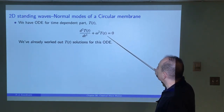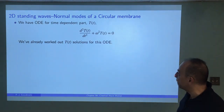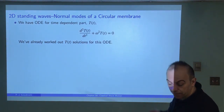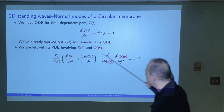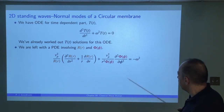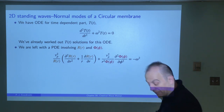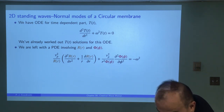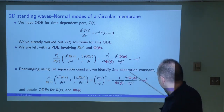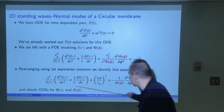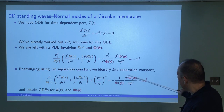We've taken our partial differential equation and pulled out an ordinary differential equation for the time-dependent part. We've already worked out solutions for that, so we don't need to revisit it. Now let's focus on the spatial part — we still have a partial differential equation with respect to r and phi. Rearranging this, we can get everything depending on r on the left and everything depending on phi on the right.